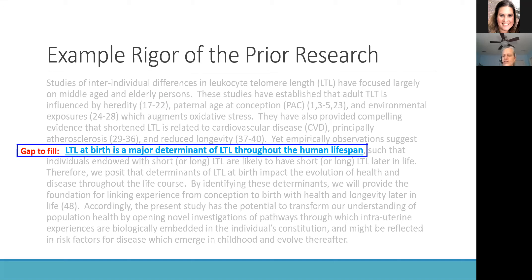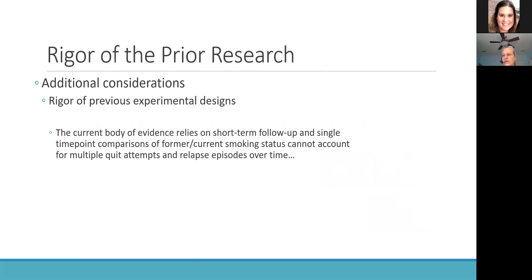This example focuses on describing the strengths and weaknesses of the prior research with respect to rigor. But as noted, there are additional aspects of rigor — for example, weaknesses in study design and key biological variables — that may also be important to discuss. This example doesn't necessarily highlight that, but let's look at some examples where that happens to be true.